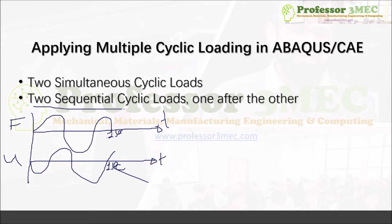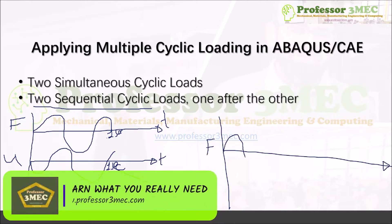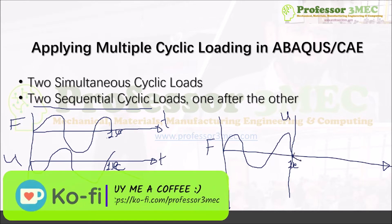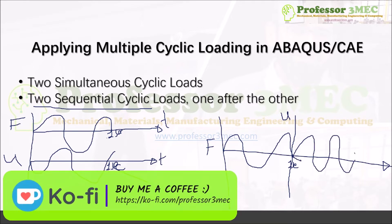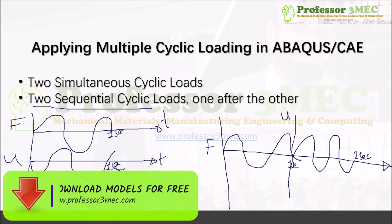In the second case, which is two sequential cyclic loads, we will apply cyclic loads sequentially. We will start with a force-controlled test, apply cyclic load for one second, and then stop the force. We will then apply a displacement boundary condition with arbitrary cyclic loading for another one second, making the total time two seconds. This way you can also apply multiple cyclic loadings, whether simultaneous or sequential.